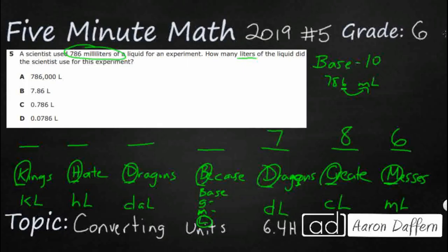So we build it from right to left. I've got 786, my ones place is in my unit place, the milliliters. The question is, how many liters did the scientists use? If we want to have the liters, we need to move the decimal over so that the ones place is right here.